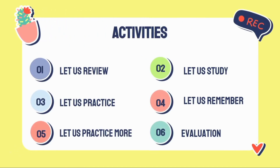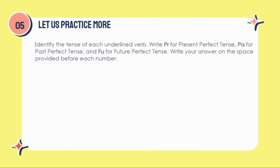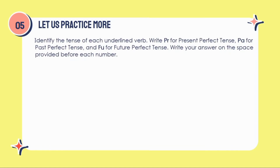Turn your learning activity sheet to page 5 for Let Us Practice More. Read and analyze the following sentences. Identify the tense of each underlined verb. Write PR for present perfect tense, PA for past perfect tense, and FU for future perfect tense. Write your answer on the space provided before each number.